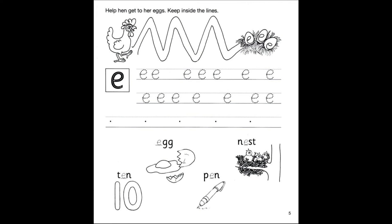Okay, page number five. The letter E. Let's see what we need to do. Help Hen get to her eggs. Keep inside the lines. So we're going to go ahead and draw a line inside the lines all the way to the eggs. Go ahead, take your time, do the best that you can.